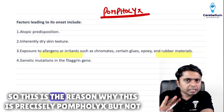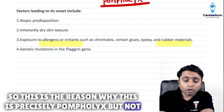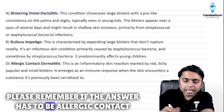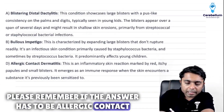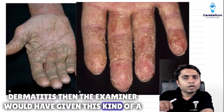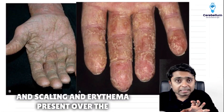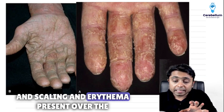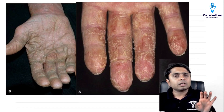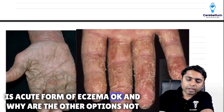This is the reason why the answer is precisely pompholyx and not allergic contact dermatitis. Please remember: if the answer had to be allergic contact dermatitis, the examiner would have given a clinical picture showing scaling and erythema present over the fingers. There can be scaling or erythema if it is the acute form of eczema.